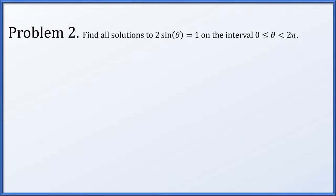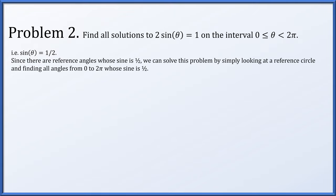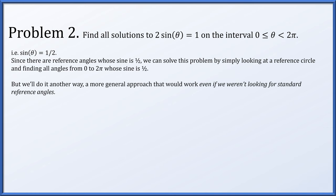In problem 2, we find all solutions to 2 times sine of theta equals 1, where theta is in [0, 2π) — possibly equal to 0 but not 2 pi. Dividing by 2, we need sine of theta to equal one half. We'll use a general method that works even when the target value, like one third, doesn't correspond to standard reference angles.